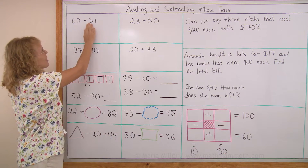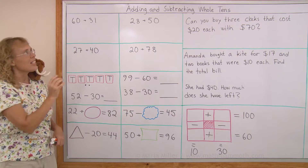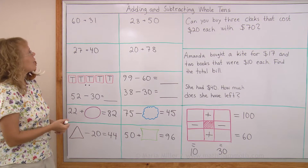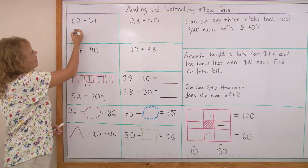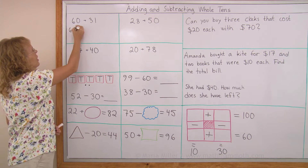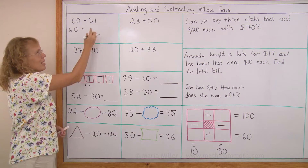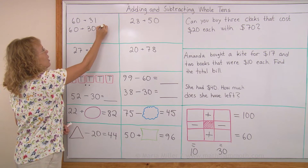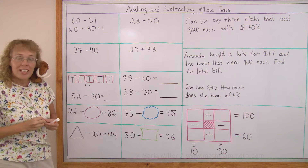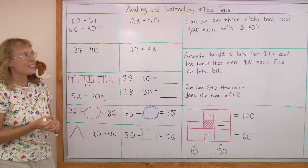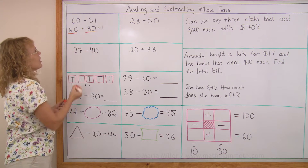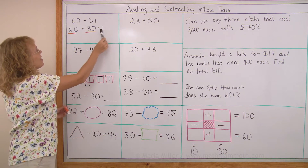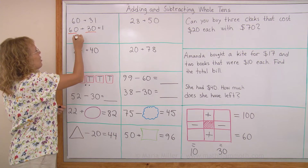Let's say I have 60 plus 31. 60 here is whole tens — 6 tens, right? The way I can add this easily in my head is I think of 31 as 30 and 1. So I can write here 30 and 1. And now I add 60 and 30, the whole tens. 60 and 30 is 90. And so I have 91. It all equals 91.